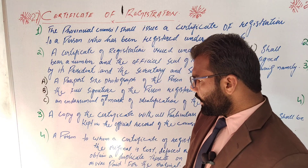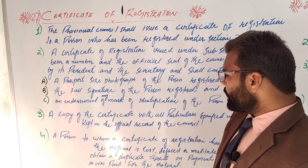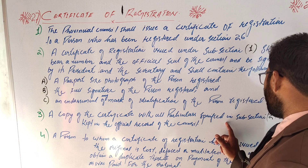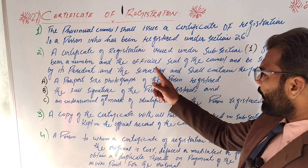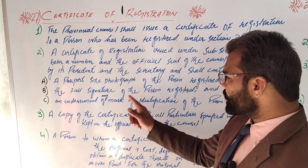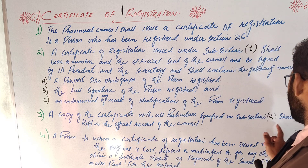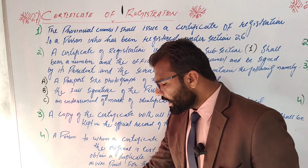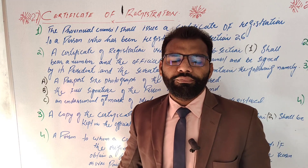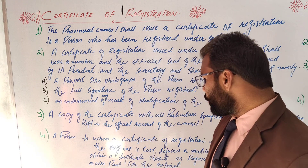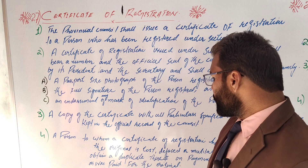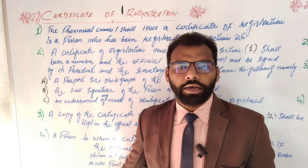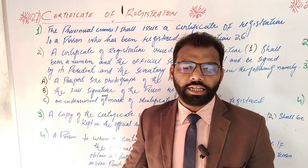Subsection 3: A copy of the certificate, with the particulars specified in Subsection 2 — that is, the passport size photograph, full signature, and mark of identification — shall be kept in the official record of the council. So a copy of this certificate is saved in the council's official record.